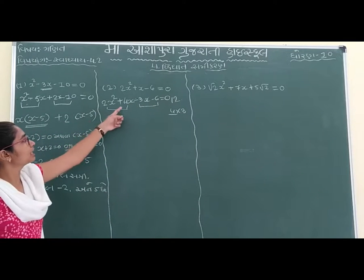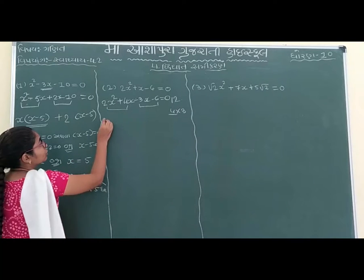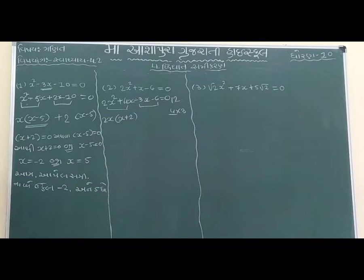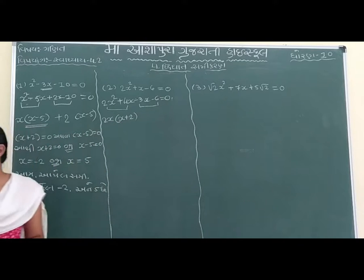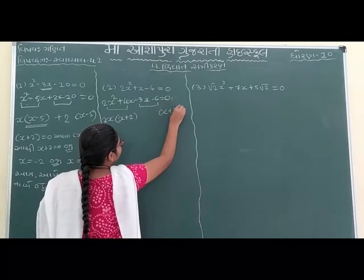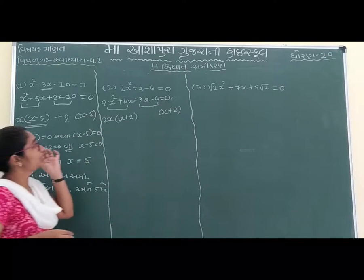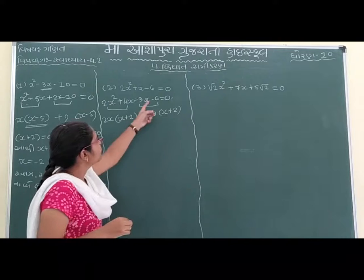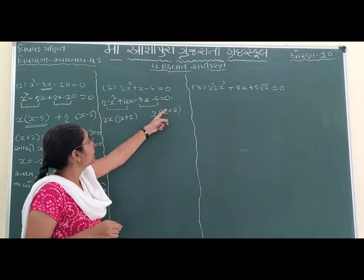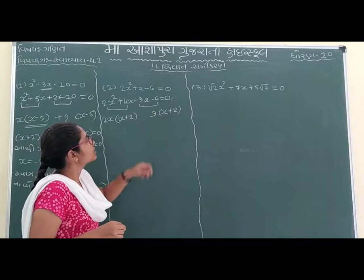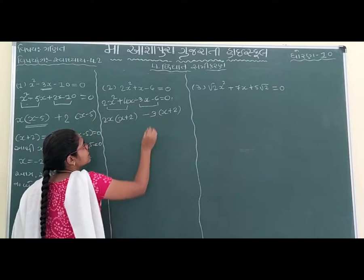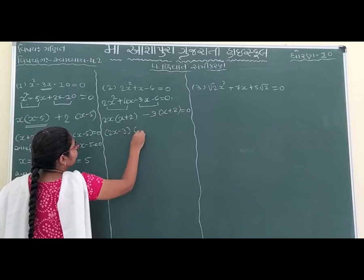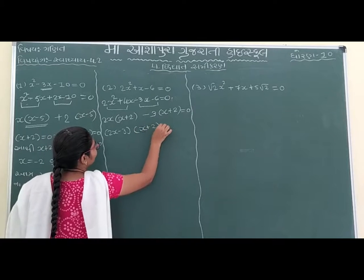2x is equal to 4x. 2x equals 2x plus 3x plus 2x equals zero. Through x will be equal, so 2x minus 3 and x plus 2 by 0.